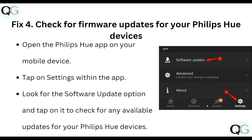The fifth step is to check for a firmware update for your Philips Hue device. Open the Philips Hue app on your mobile device, tap on Settings within the app, look for the Software Update option, and tap on it to check if any updates are available.